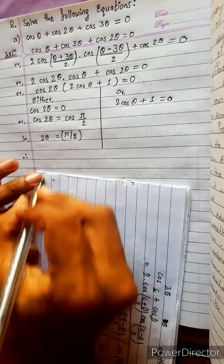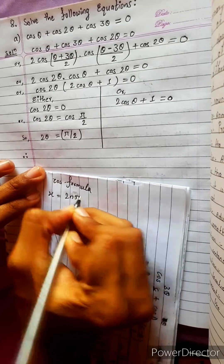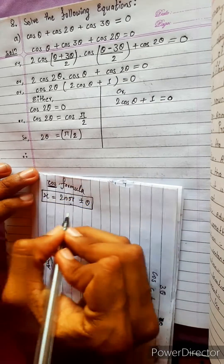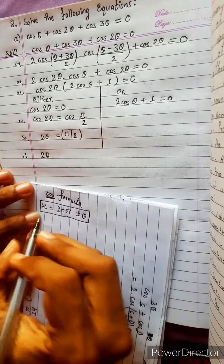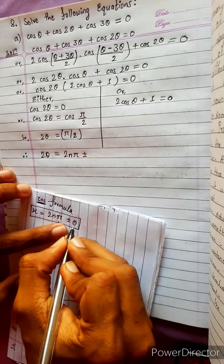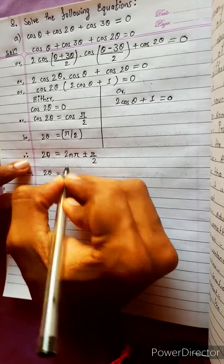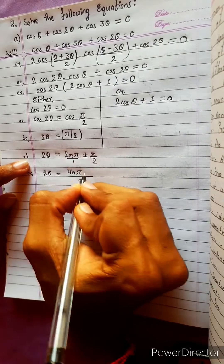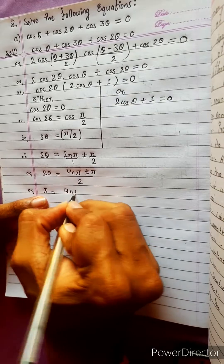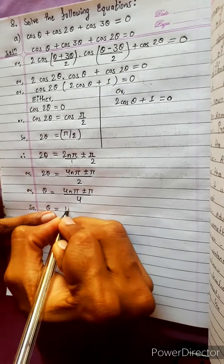Applying the general solution formula for cosine: θ = 2nπ ± α. So 2θ = 2nπ ± π/2, which gives θ = nπ ± π/4. Multiplying through: θ = (4nπ ± π)/4, or equivalently θ = (4n ± 1)π/4.